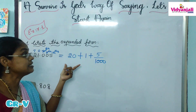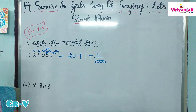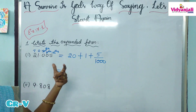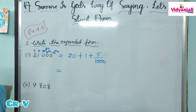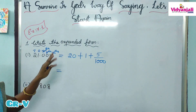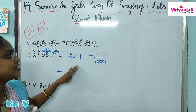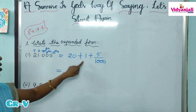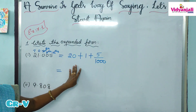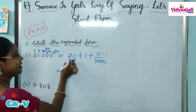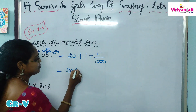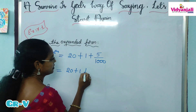This is the fractional expansion. Now let us write the decimal expansion also. In fractional expansion or decimal expansion, the whole part never changes. So 20 plus 1 we have to write as it is.